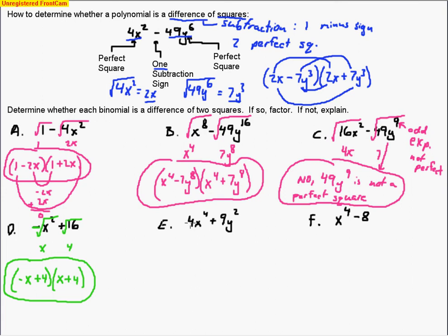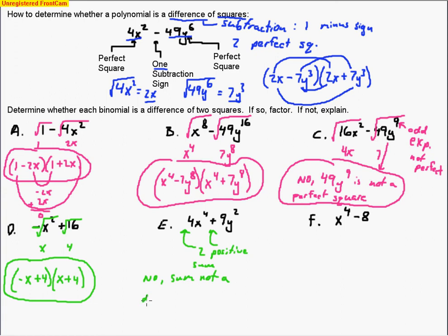For the next example, both terms are perfect squares with even exponents and coefficients that are perfect squares. But look — we have two positive numbers. There's no negative sign; it's not a difference, it's a sum. So we're not subtracting, and this is not going to factor. The reason is we have a sum, not a difference. Watch for that — for a difference of squares, it must be a difference to start with, meaning one minus sign.